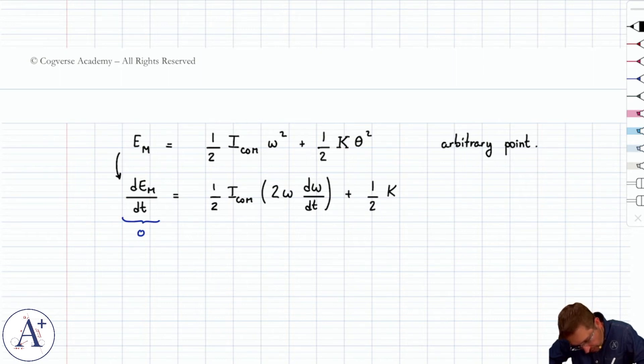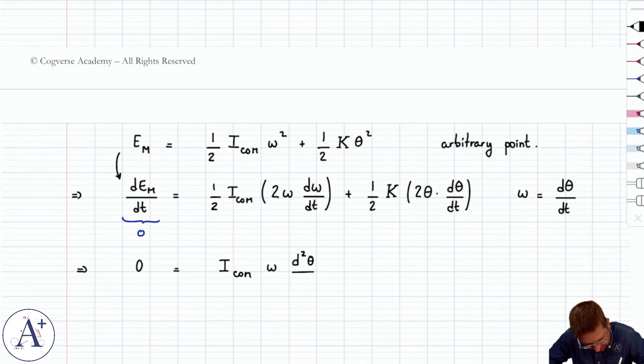Plus one-half of kappa, and then we're going to get two theta. Theta is a function of time, so you've got to multiply by d theta dt, and recall that omega is d theta dt. So we get zero on the left-hand side equals I center of mass omega d omega dt, which is d2 theta dt squared, same thing as alpha, plus kappa theta d theta dt is omega. So we can cancel out omega.